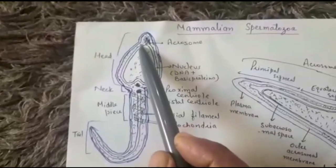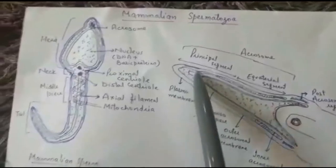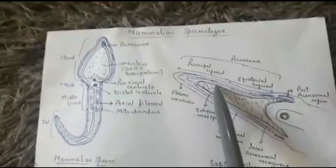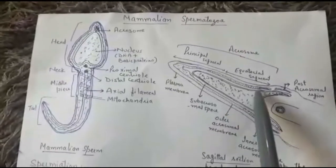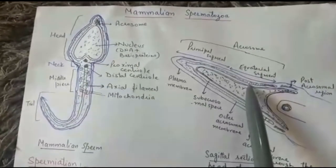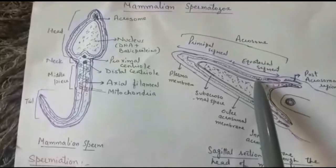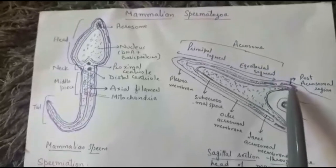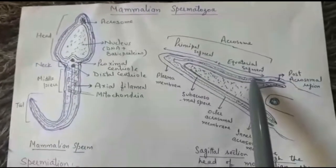The nucleus is covered by the acrosome, which lies between the nuclear envelope and the plasma membrane. The part of the acrosome that covers the anterior part of the nucleus is known as the proximal segment, and the lower part covering the posterior part of the nucleus is known as the equatorial segment. It is the equatorial segment by which the sperm comes in contact with the egg. Just behind the equatorial segment is a post-acrosomal region made up of very dense material.